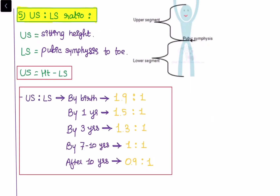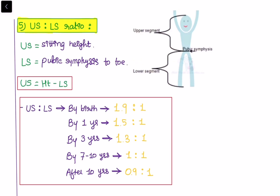The fifth parameter is the upper segment to lower segment ratio. The upper segment is defined as sitting height, and the lower segment is the length from the pubic symphysis to the top — so upper segment equals height minus the lower segment. By birth, the ratio is 1.9:1. By 1 year it becomes 1.5:1. By 3 years it becomes 1.3:1. By 7 to 10 years it becomes 1:1. The important thing to remember is that the upper to lower segment ratio becomes equal at age 7 to 10 years.